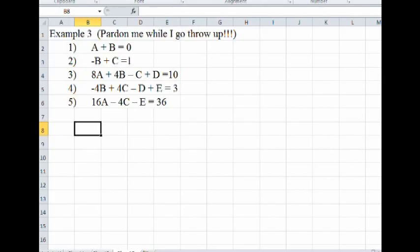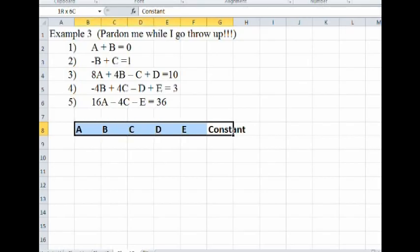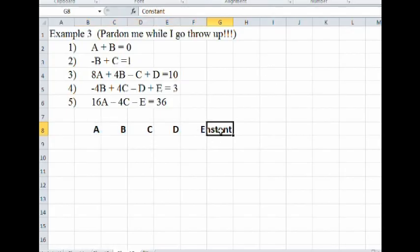In this one, I'm using A, B, C, D, and E. So A, B, C, D, and E. And this will be the constant. Constant there. And like I did before, I'm going to justify these to the right. And, okay, let me just move this over one. There we go.